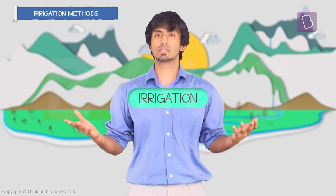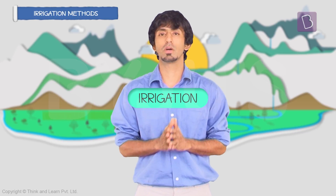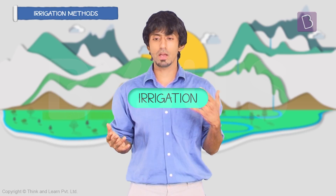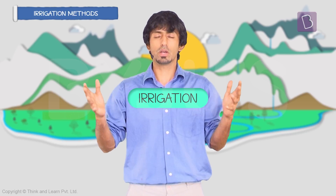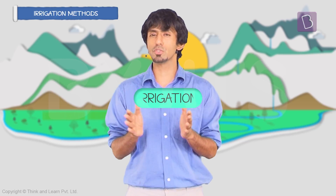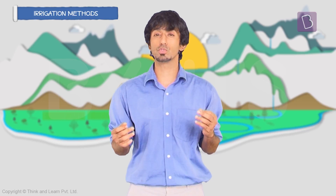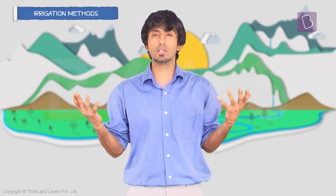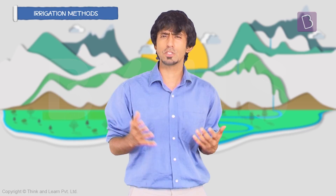Irrigation is exactly attempting to solve this problem of giving water to the fields, to the agriculture, to people who are doing agriculture, whenever they need it the most. The main objective is to reduce the dependency on monsoons, based on which almost a good amount of our farming still depends.